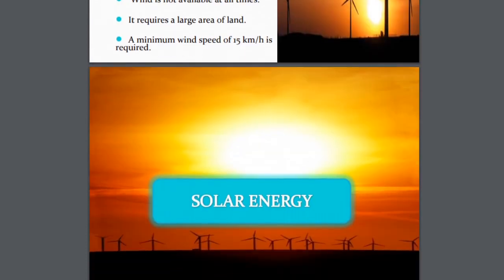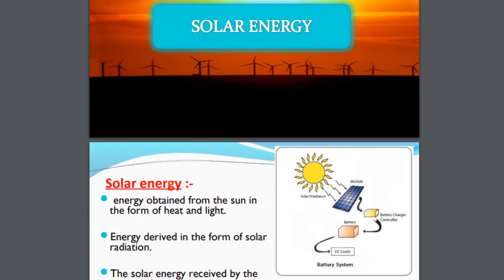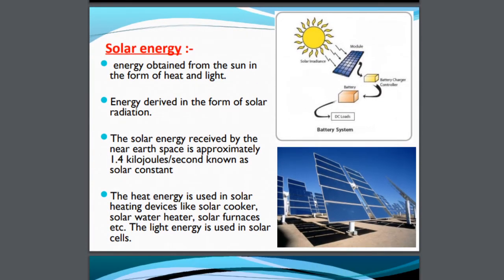Now let's move on to one of the largest sources of power — solar energy. The energy which you obtain from the sun in the form of heat and light. This energy is derived in the form of solar radiation, which is the way sun rays move out of the sun and are received on the earth's surface in the form of terrestrial insolation. The incoming solar radiation is known as insolation. The solar energy received by the earth's space is approximately 1.4 kJ per second, also known as the solar constant.